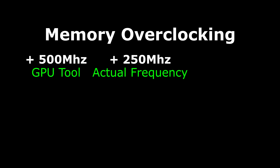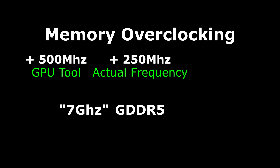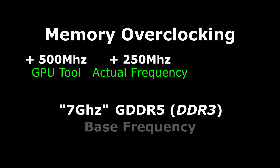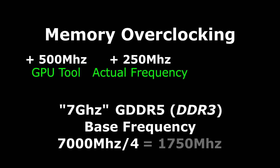To make it even more confusing, you may see your card advertised as say 7 gigahertz. Well, if your card is using GDDR5, that's actually based on DDR3. The base frequency — the number you'll actually see in the overclocking tool — is one-fourth of that, or 1750 megahertz.